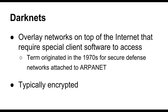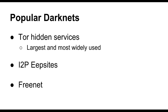Popular dark nets include Tor hidden services, which are the largest and most widely used, but two other more popular services are I2P and Freenet. There are some additional dark net systems that have been developed by academic researchers and others, but they're not nearly as popular as these three.